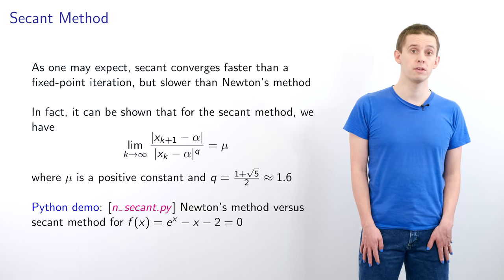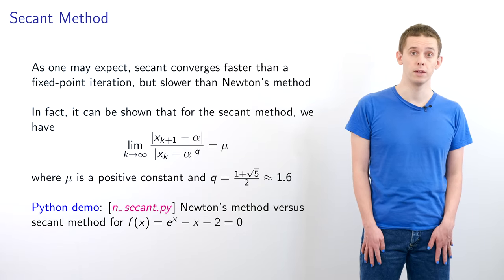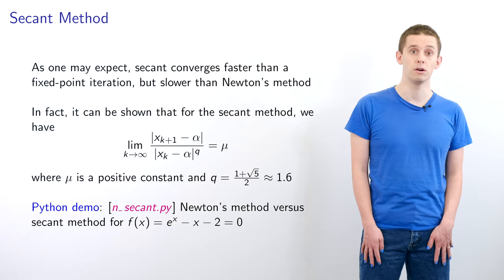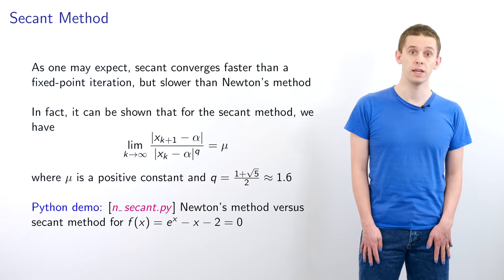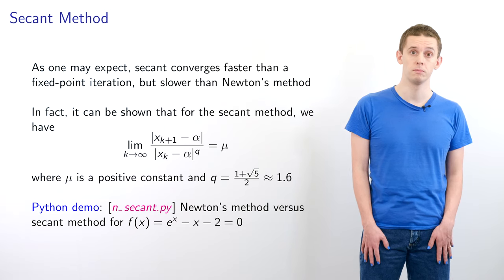Let's now look at a Python example where we'll compare Newton's method and the secant method for root finding on the function f(x) = e^x - x - 2. The program n_secant.py demonstrates both methods. We first define our function f(x), and then define a function df(x) that calculates the analytical derivative, which in this case is e^x - 1. This derivative function will only be required by the Newton method and won't be needed by the secant method.